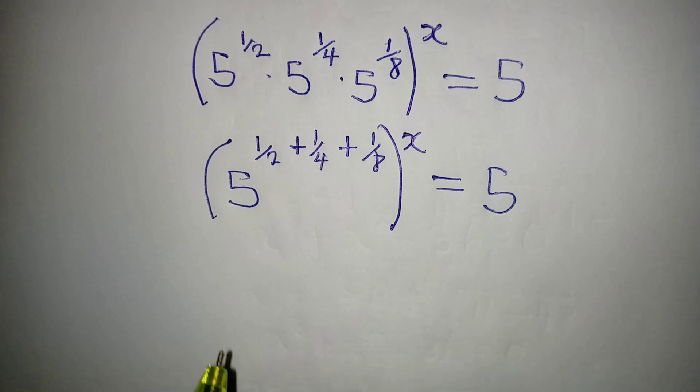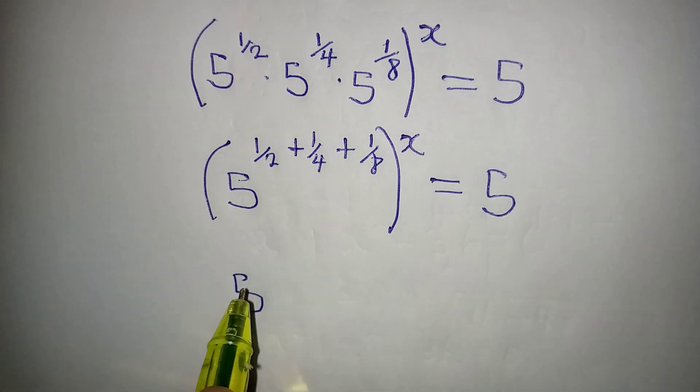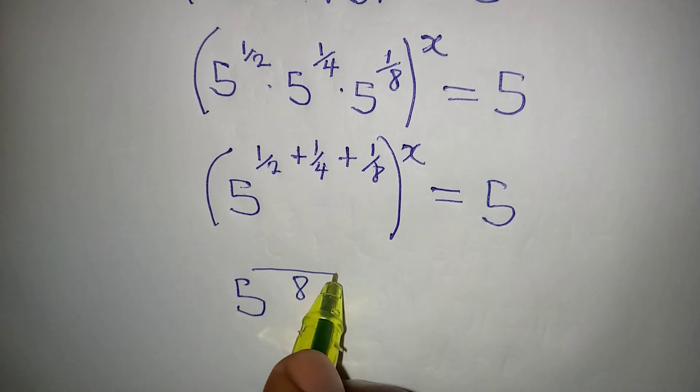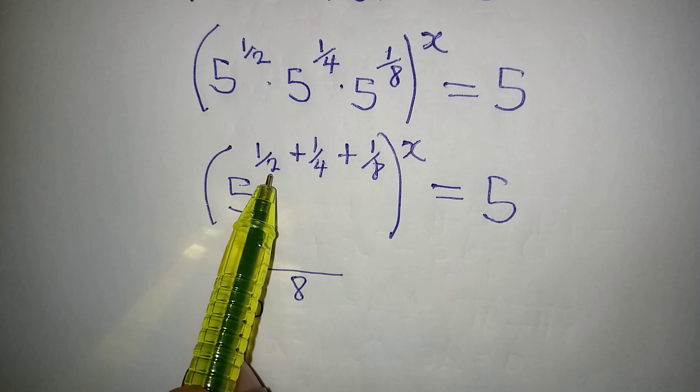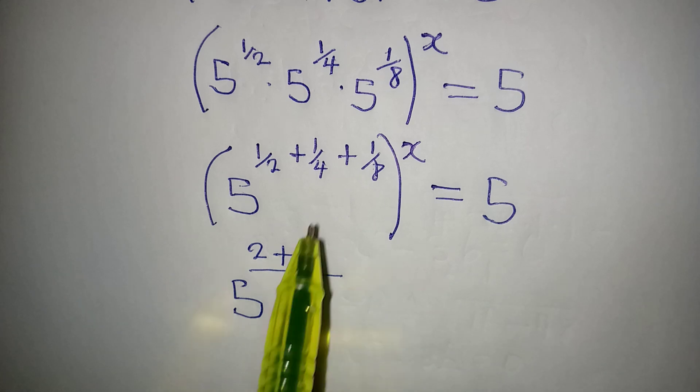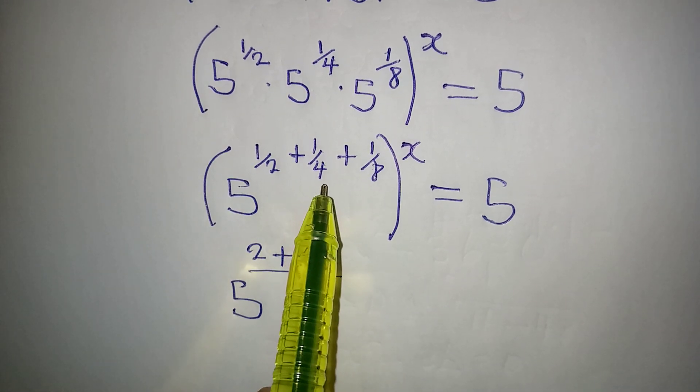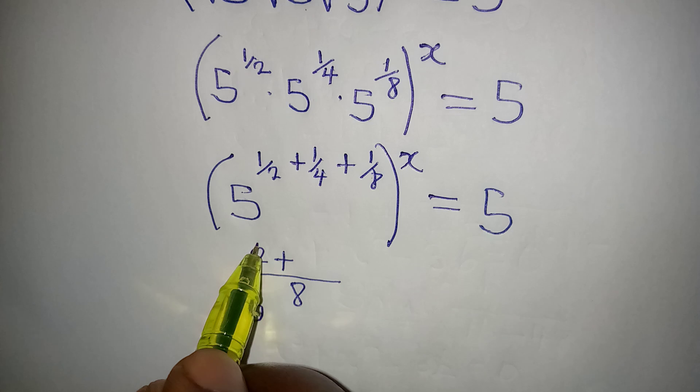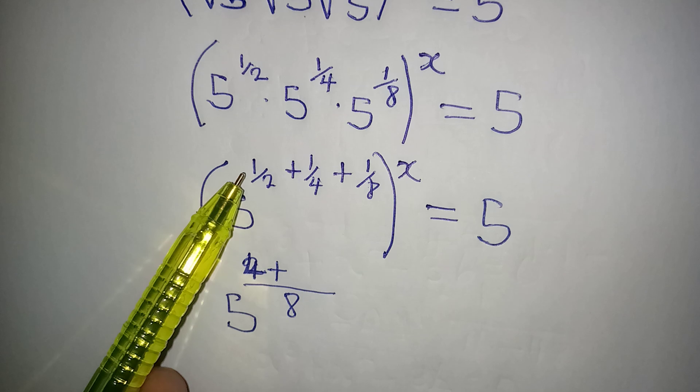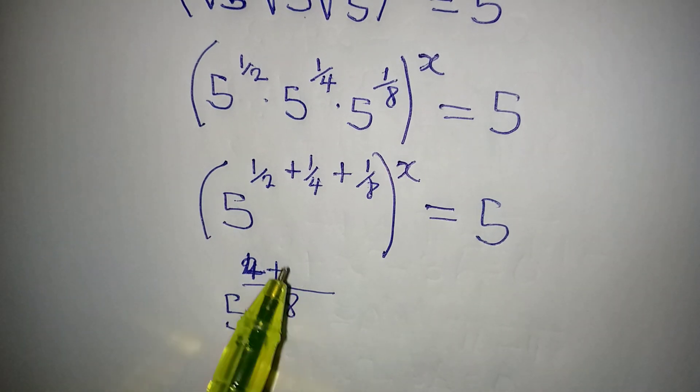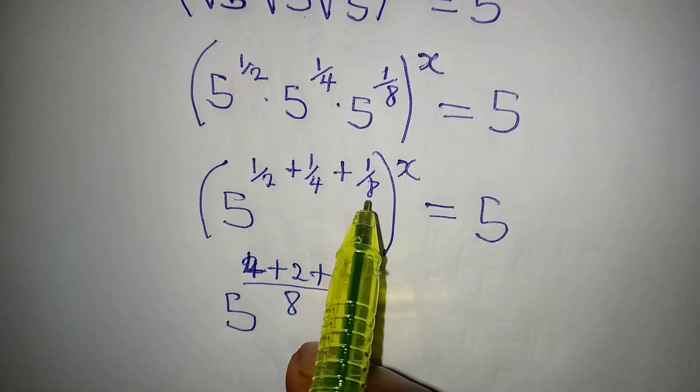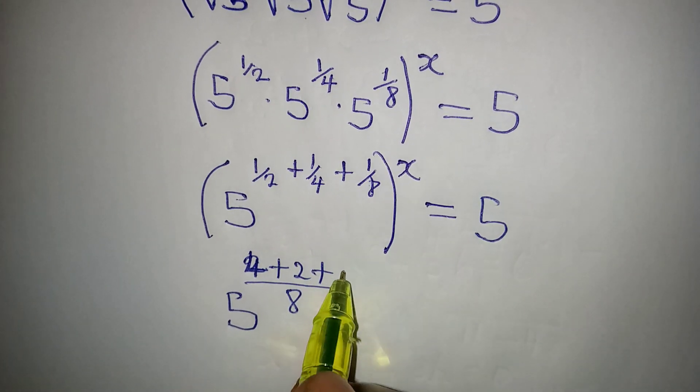Now what do I do from here? We have 5 again, then the LCM of the power is 8. Then 8 divided by 2 is 4, supposed to be 4 over here because 8 divided by 2 is 4 times 1 is 4. 8 divided by 4 is 2 times 1 is 2, plus 8 by 8 is 1 times 1 is 1.